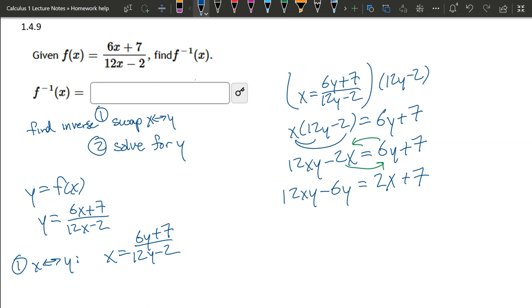Alright, we're almost there. Y appears twice. We're very close. How do I make it appear once? My favorite f-word: factor. So y factored out of negative 6y is negative 6. Factor y out of 12xy is 12x, and this equals 2x plus 7.